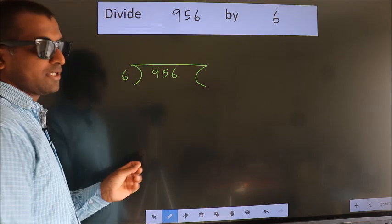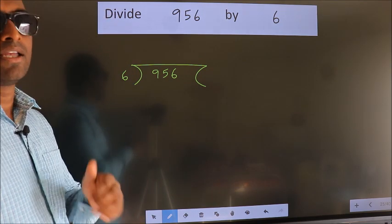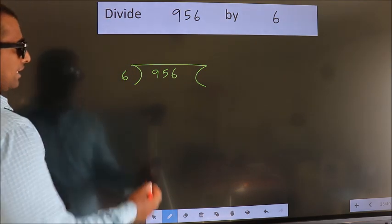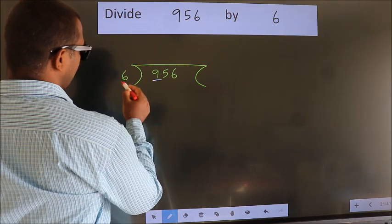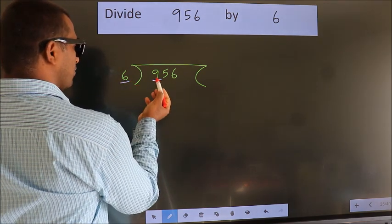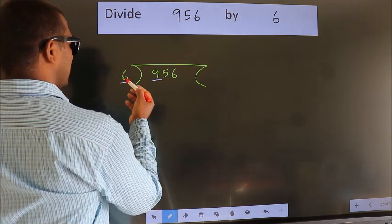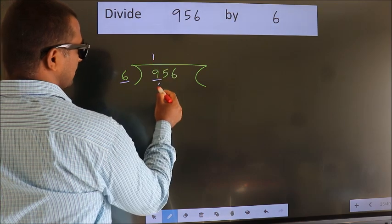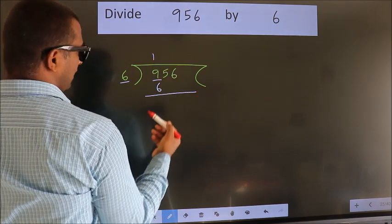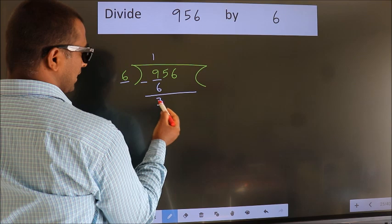This is your step 1. Next, here we have 9, here 6. A number close to 9 in 6 table is 6 1s, 6. Now we should subtract. We get 3.